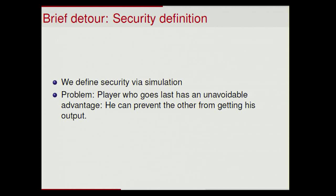So now, before getting into the protocol, I'd like to do a brief detour into the security definition. We define security via simulation, as you might expect. But we can't do exactly what I showed in the introduction — a black box that does everything you want as the ideal functionality. The problem is that the player who goes last has an unavoidable advantage: he can always prevent the other player from getting his output. If you imagine the last round of communication, the person who speaks last can just walk away from the table. By then, that player has his output and the other player can't have his yet. So since this is unavoidable, we have to build it into the ideal functionality — in some sense, it's the only attack possible.